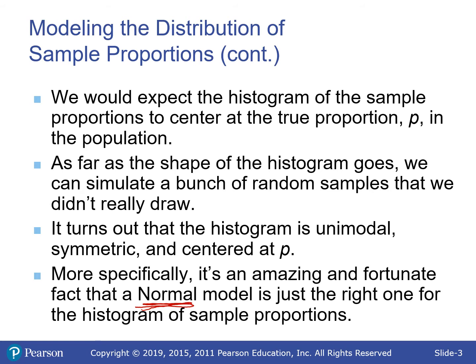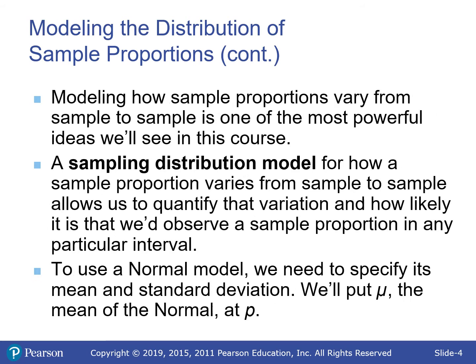We're able to use the normal model. Modeling how sample proportions vary from sample to sample is one of the most powerful ideas in the course, and the same is true for sample means. The sampling distribution model allows us to look at that variation and find the probability of getting something within a given interval. In the past we asked about one value; now we ask what's the probability of a group of 10 having their average in a certain range.